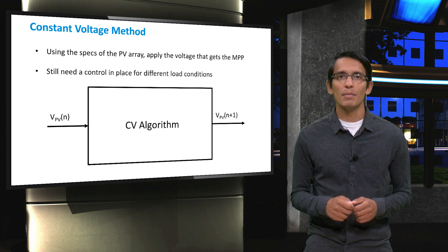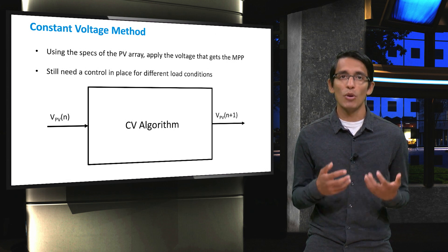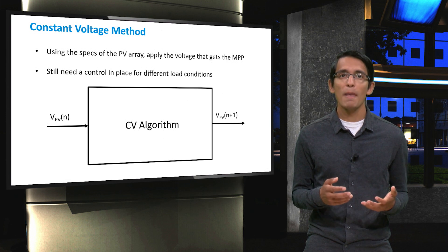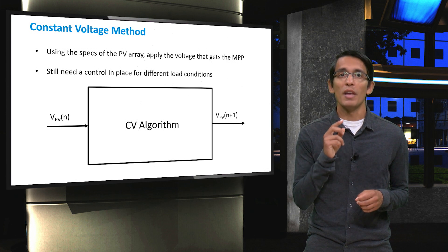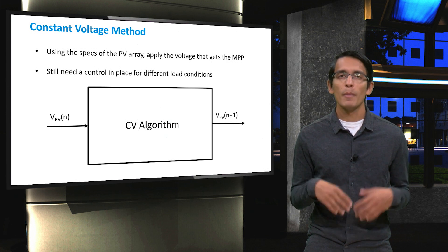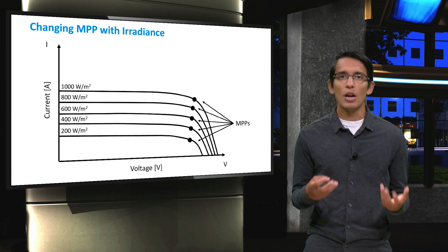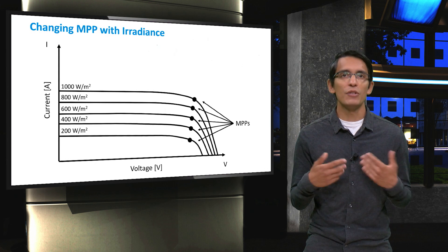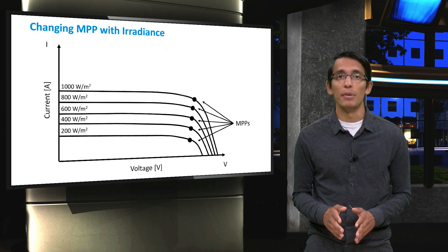One major drawback is that the system has to be hard-coded based on the panels. Since the MPPT logic is programmed in the power electronics components, this means that those components will only work if they are attached to specific panels with a specific VMPP. Furthermore, changes in irradiance and other conditions can cause the VMPP to shift and this will mean that running a constant VMPP technique will result in less than ideal power output.